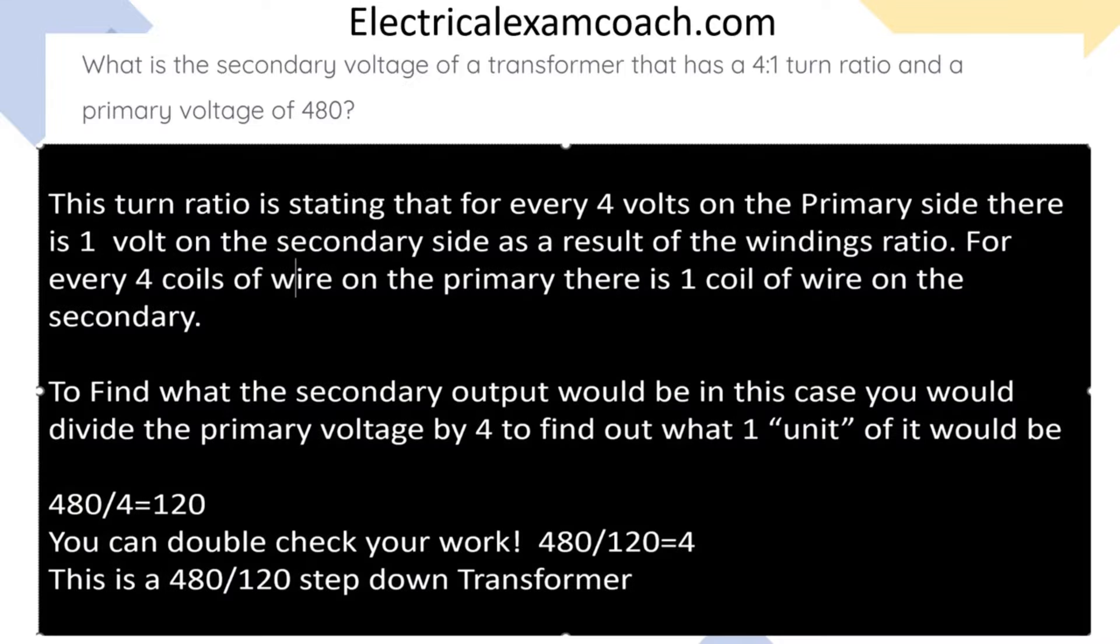This turns ratio is stating that for every four volts on the primary side there is one volt on the secondary side as a result of the windings ratio. For every four coils of wire on the primary side there is one coil of wire on the secondary side.